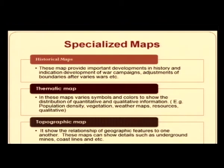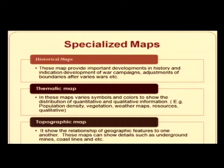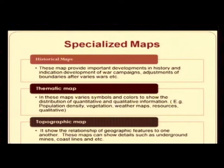Specialized maps include several categories. Historical maps provide important developments in history, including war campaigns and adjustment of boundaries from various wars. Thematic maps use various symbols and colors to show the distribution of quantitative and qualitative information, such as population density, vegetation, weather maps, and resources. A topographic map shows the relationship of geographic features to one another and can show details such as underground mines, coastal lines, etc.